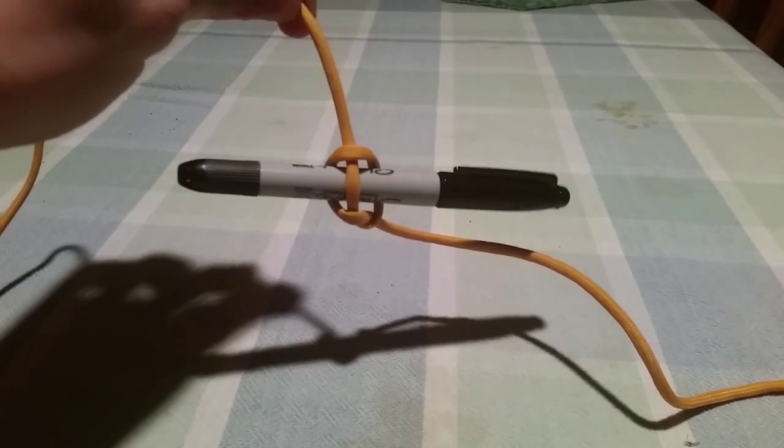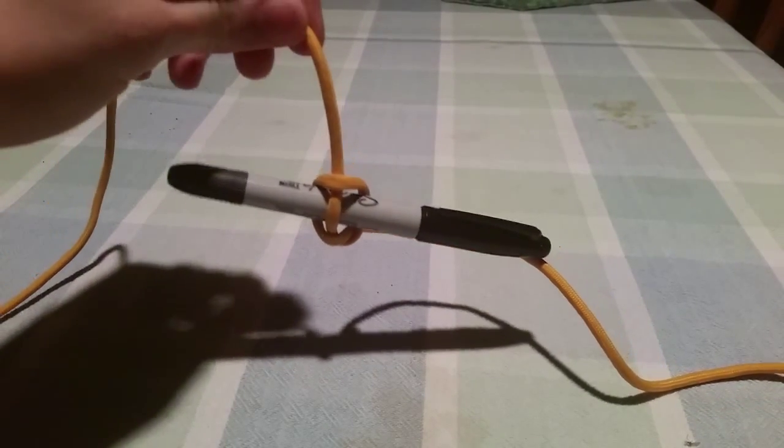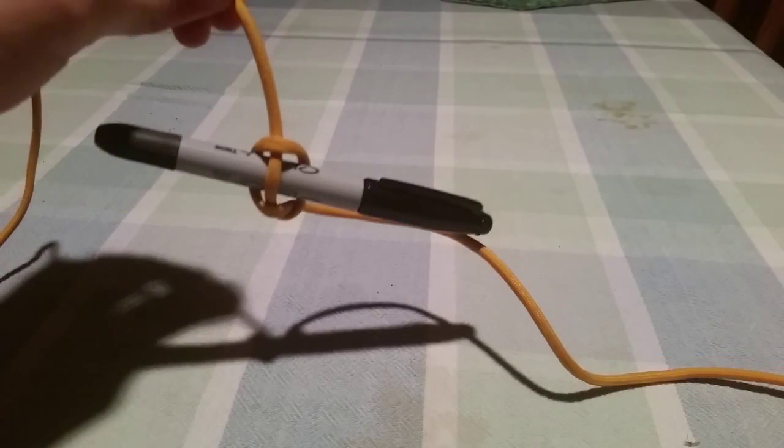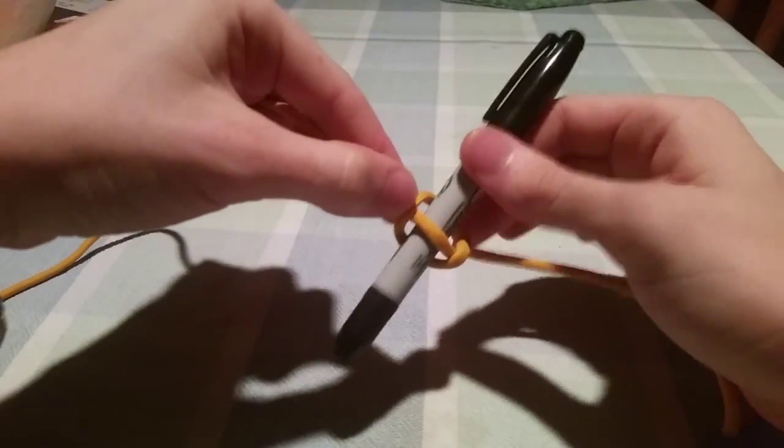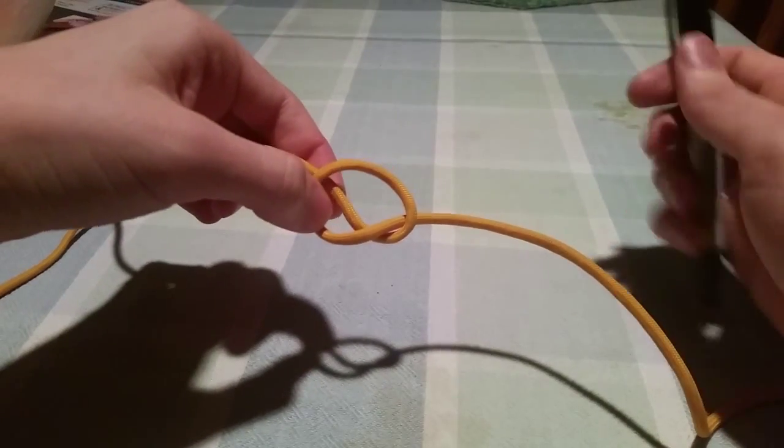It will just hold there. It was called a marlin spike hitch because it used to hold marlin spikes, which are a tool to use in the tying of knots and other things around a ship. They're kind of tapered and icicle-shaped.